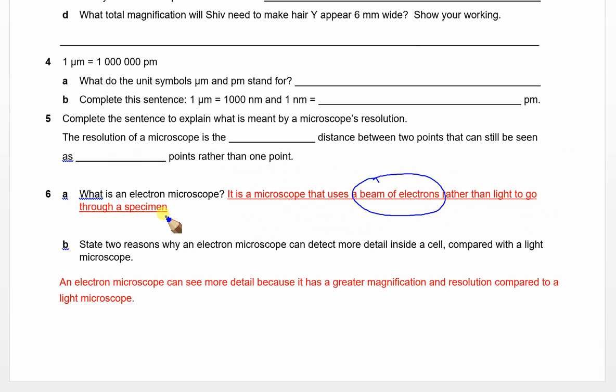Part B: State two reasons why an electron microscope can detect more detail inside a cell compared with a light microscope. Why are electron microscopes better for seeing in detail? The first reason is greater magnification, and the second reason is greater resolution, so we can see in more detail. And there you are, homework done. Well done, guys.